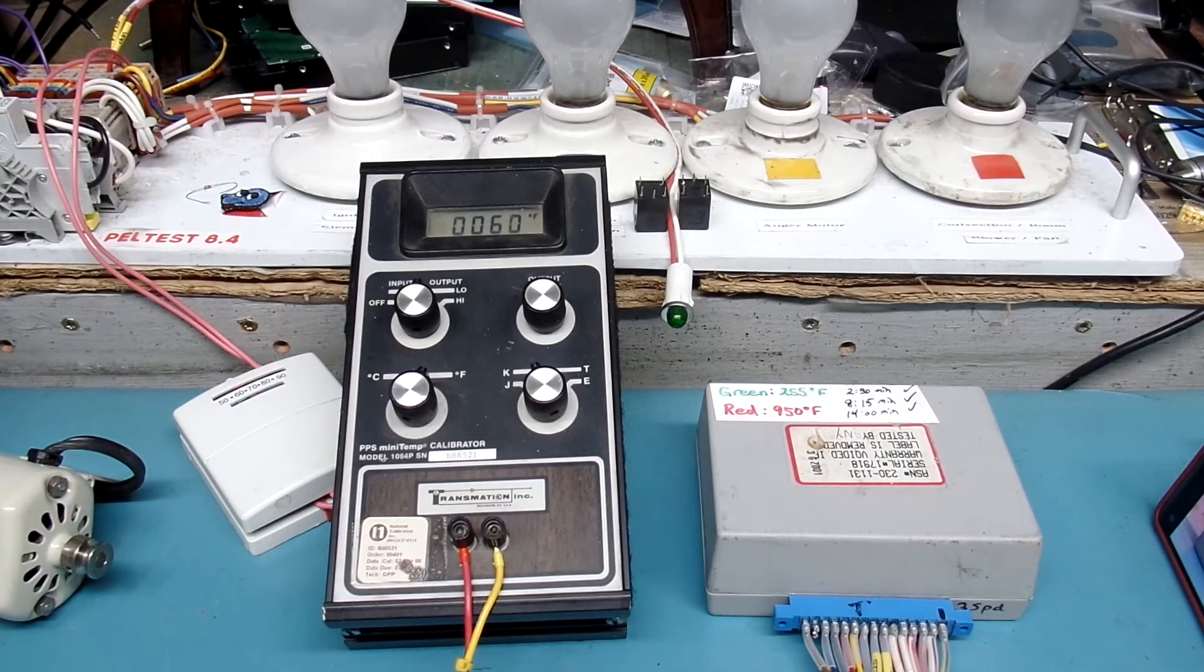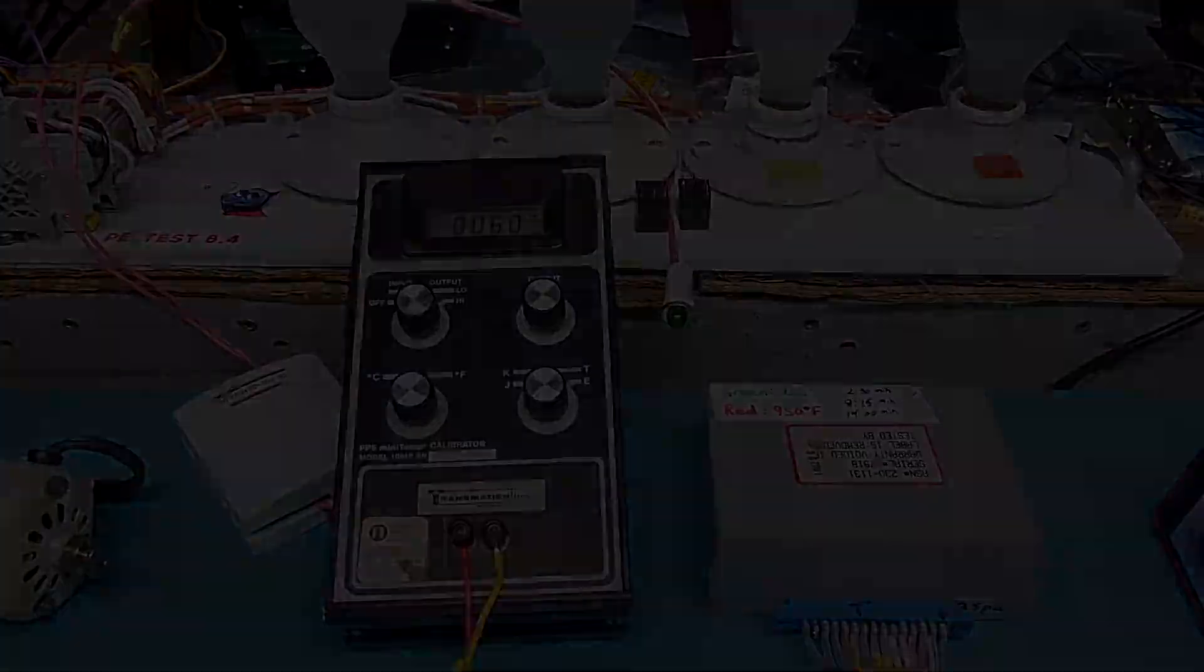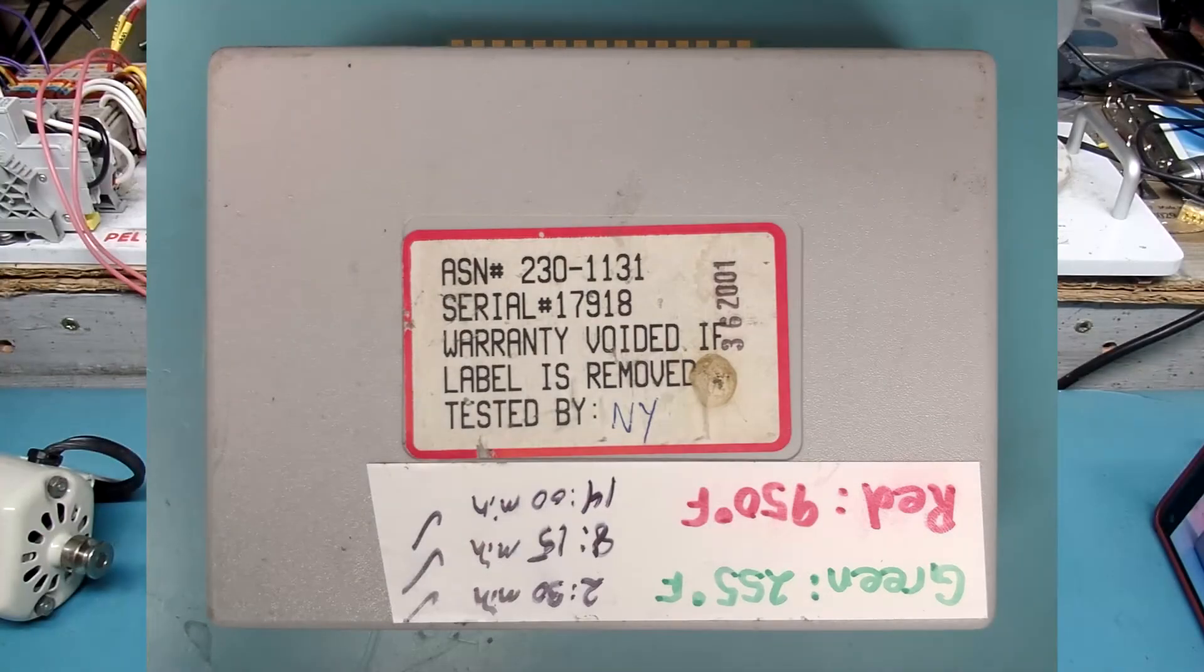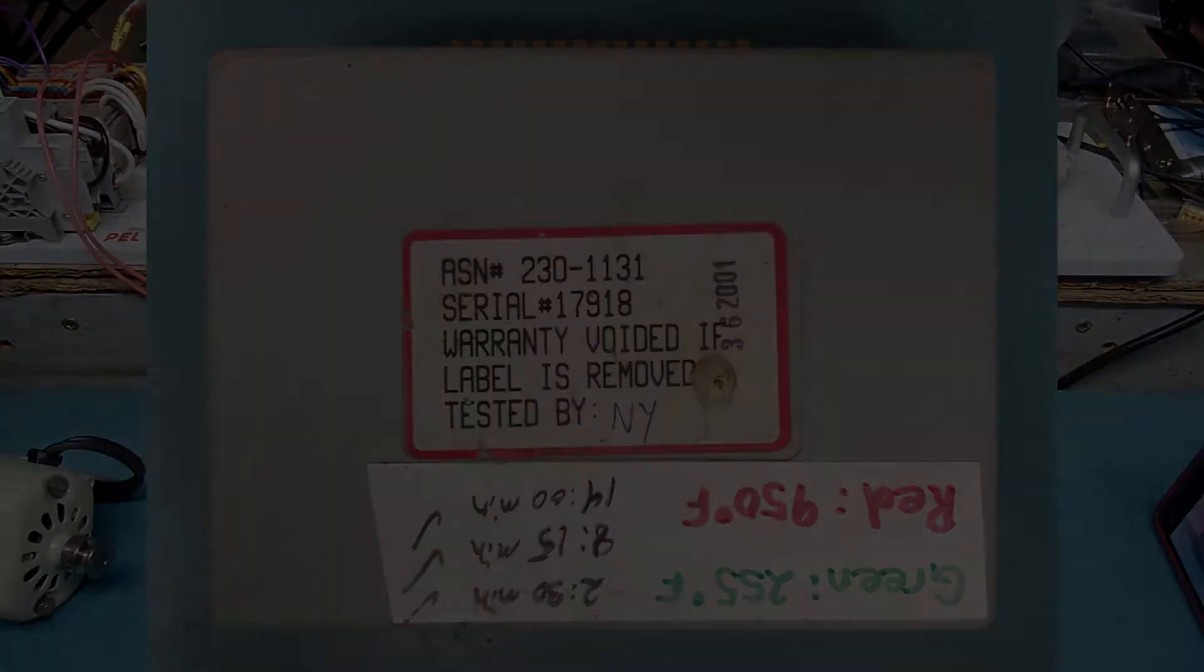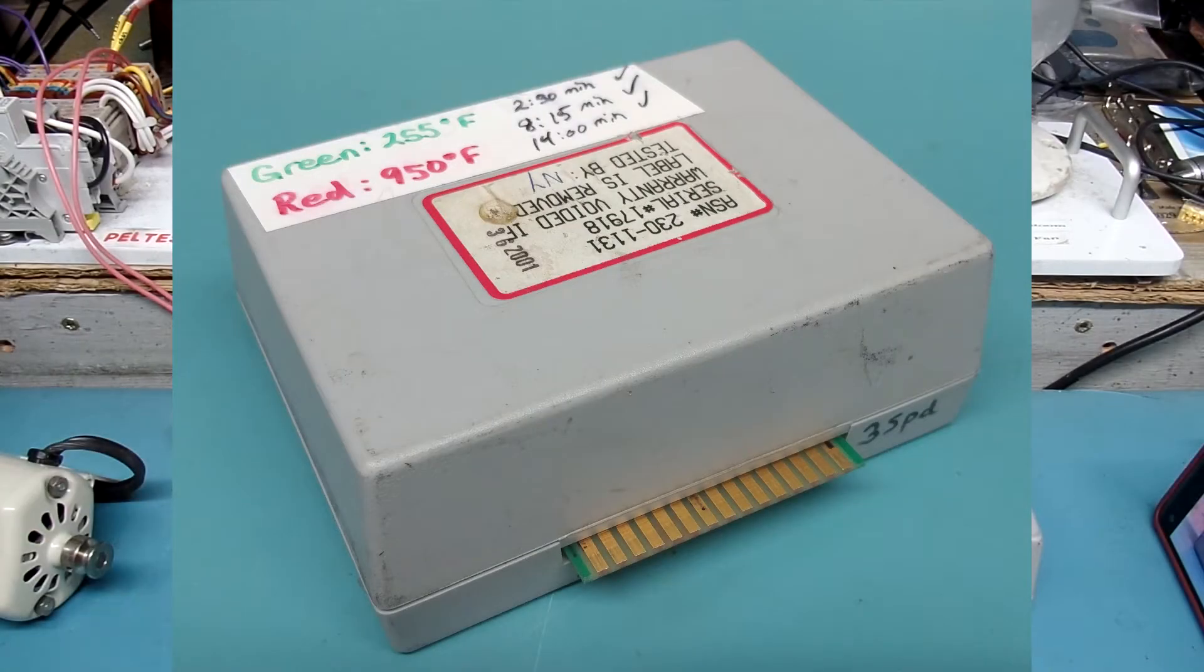Hi, everyone. Thanks for dropping by my YouTube channel today, where I'll be testing a Quadrifier 230-1131 pellet stove controller. This controller is in an all-grey box. It is a three-speed controller and came out of a 1000 insert pellet stove.